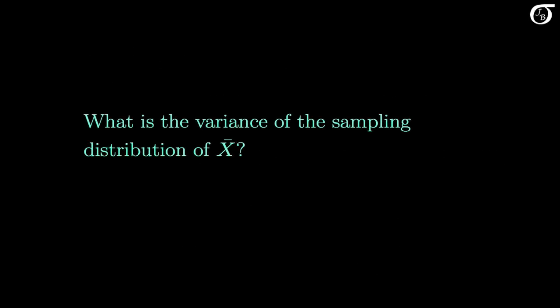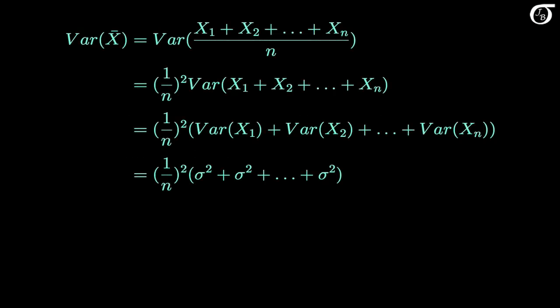What is the variance of the sampling distribution of X-bar? We're going to pursue a similar path, but there are a couple of important differences. The variance of X-bar equals the variance of the sum of X1 through Xn over n. When a random variable gets multiplied by a constant, its variance gets multiplied by the square of that constant. So we take 1 over n outside the variance but we need to square it.